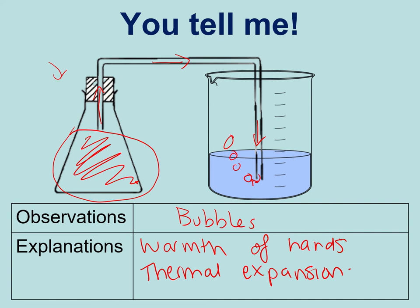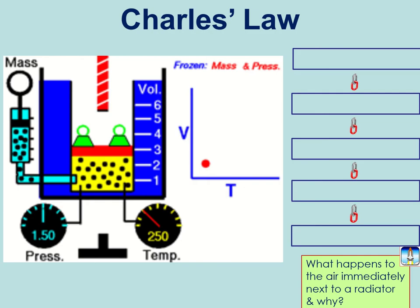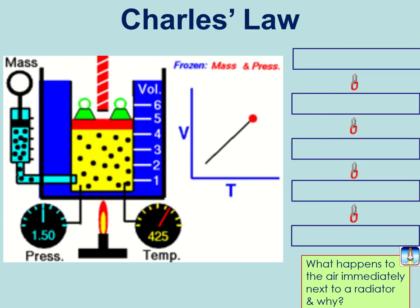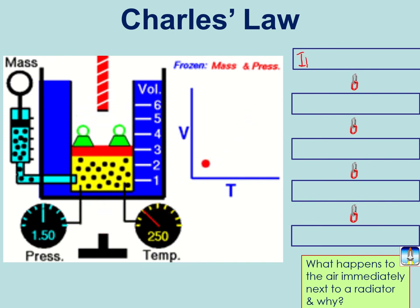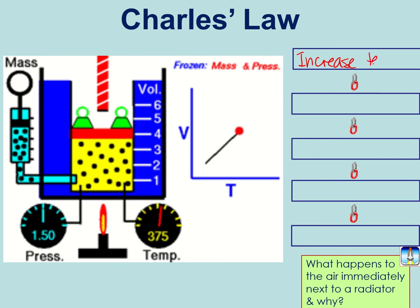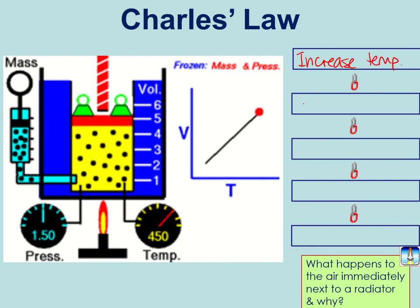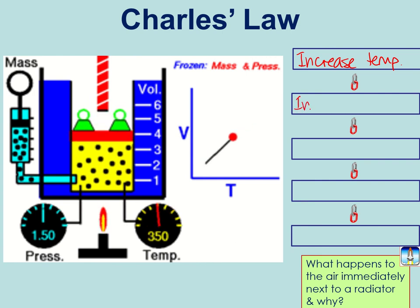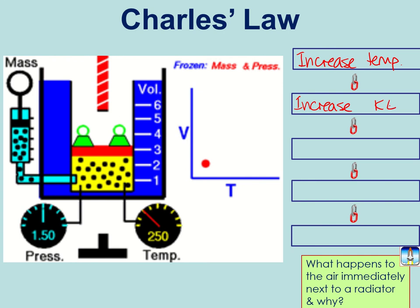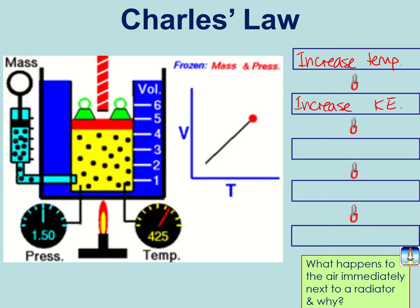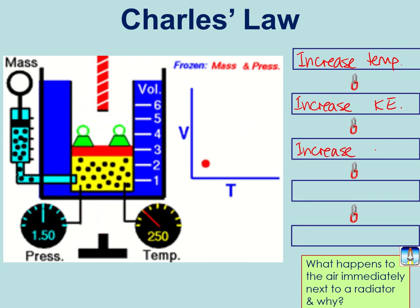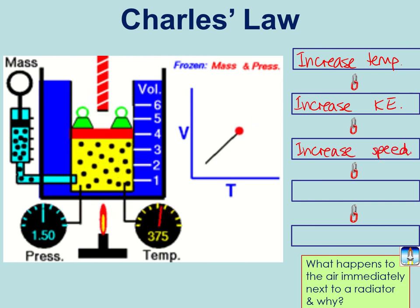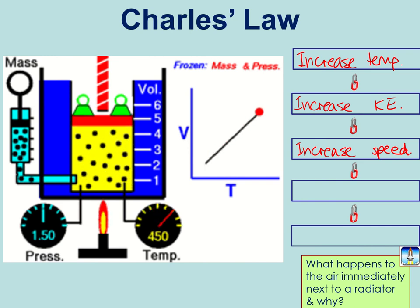So why does that happen? Why is it that when you warm up a gas, it takes up more room? This links to something called Charles's Law, which you will do when you study ideal gases. But essentially, if you increase the temperature of the particles, temperature is a measure of average kinetic energy. So you increase the kinetic energy. Kinetic energy is linked to particle speed, so you increase the speed.